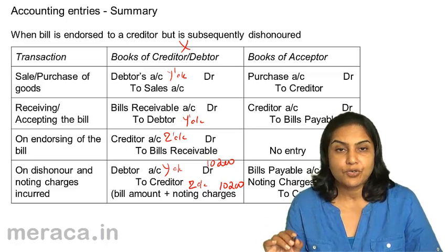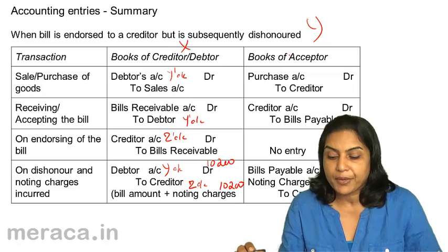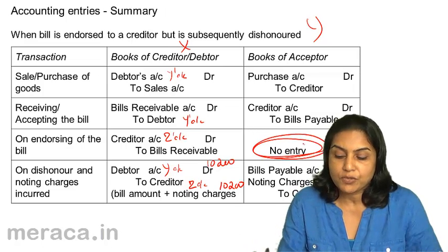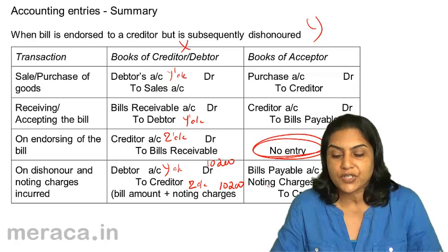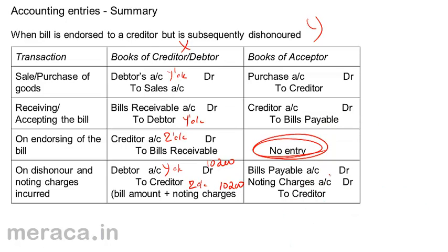However, there is no change in the books of Y: purchase account debit to X; X's account debit to bills payable. In case of endorsement — that is entirely X's transaction — there is no entry in the books of Y. But on dishonour: bills payable account debit, the bill is cancelled; noting charges account debit 200; to X's account 10,200. Y has to pay X 10,000 plus noting charges of 200.